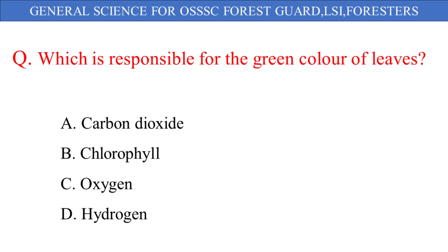Which is responsible for the green color of leaves? The given options are: A. Carbon dioxide, B. Chlorophyll, C. Oxygen, D. Hydrogen. And the correct answer is option B: Chlorophyll.